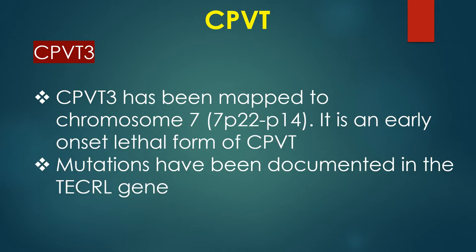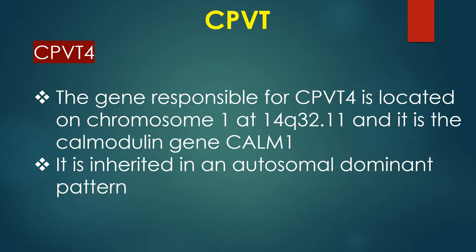CPVT3 has been mapped to chromosome 7. It is an early onset lethal form of CPVT, with mutations documented in the TECRL gene. The gene responsible for CPVT4 is located on chromosome 1, and it is the calmodulin gene CALM1, inherited in an autosomal dominant pattern.